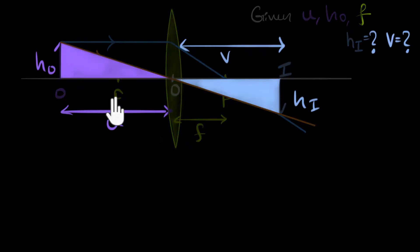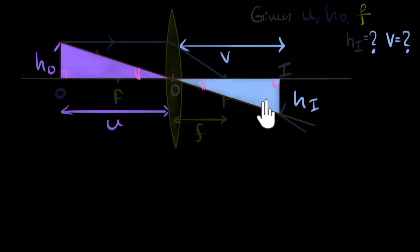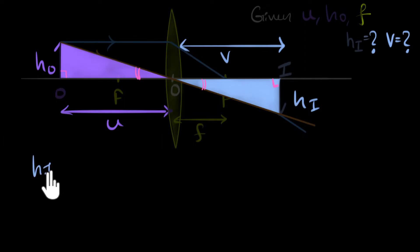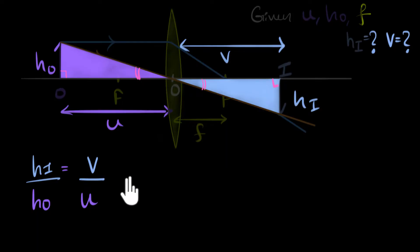If you look carefully, you will see these two are similar triangles. This angle here must be the same as this angle — they are vertically opposite to each other. Then they both have a right angle, and therefore the third angle must also be the same, making them similar triangles. Notice the side lengths are exactly what we want, so we can say their sides have the same ratios. Taking HI divided by HO, that should equal V divided by U. So we have found one equation.